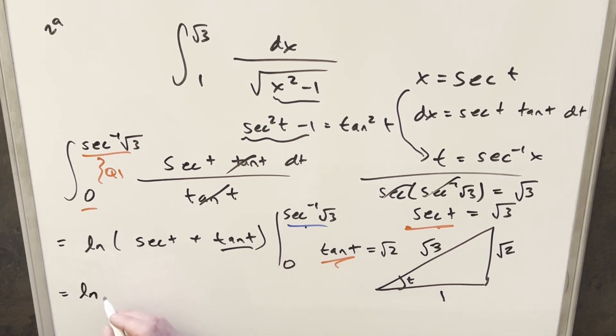So going ahead with this, we're going to have, this is just for this upper bound, we're going to have natural log, secant t is going to be square root of 3, plus our tan t value is going to be square root of 2, and then minus, evaluating at 0, we're going to have natural log, secant at 0 is going to give me a 1, and then plus tan at 0 is just 0,